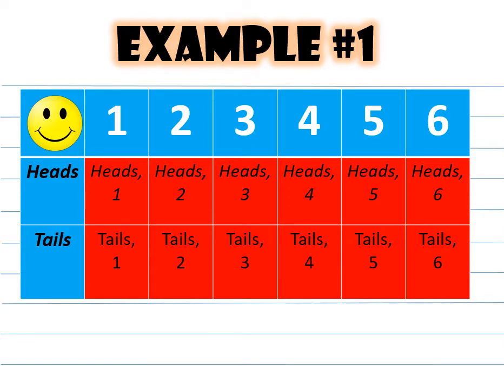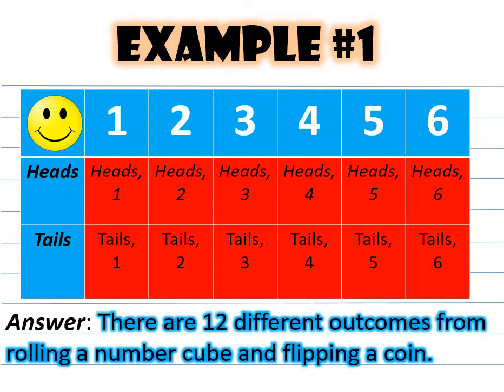But you could also flip the coin and have it land on tails. The number cube could land on 1 and you'd have tails 1 or tails 2, tails 3, tails 4, tails 5, and tails 6. If you add up all those different possibilities, you would say that there are 12 different outcomes from rolling a number cube and flipping a coin.